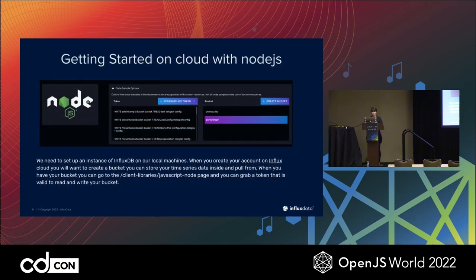Once you do that, you can get started on cloud with our Node.js client library. It's specifically set up as a client for a JavaScript environment. It's pretty straightforward — you basically tell it what bucket you're storing your data in and the token you wish to use. Tokens can either be all-access or read/write, depending on the permissions you'd like. From there, it actually gives you a lot of the code I'm about to show, telling you how to write it all out. It makes it very straightforward and easy.